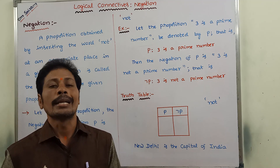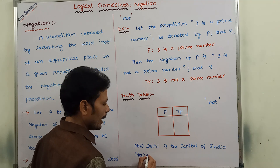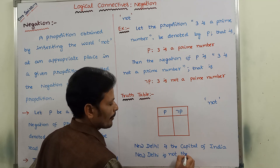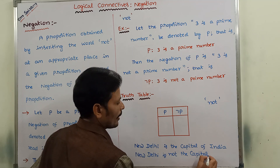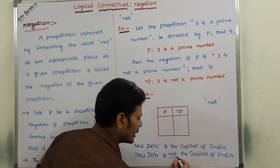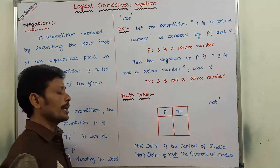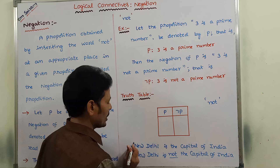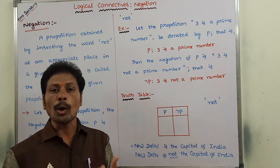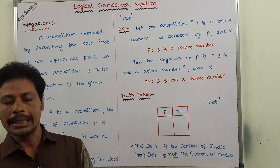Then we get the negation of this proposition. We write: 'New Delhi is not the capital of India.' Here, we are inserting the word 'not' at an appropriate place in the given proposition, and that gives us the negation of the proposition.